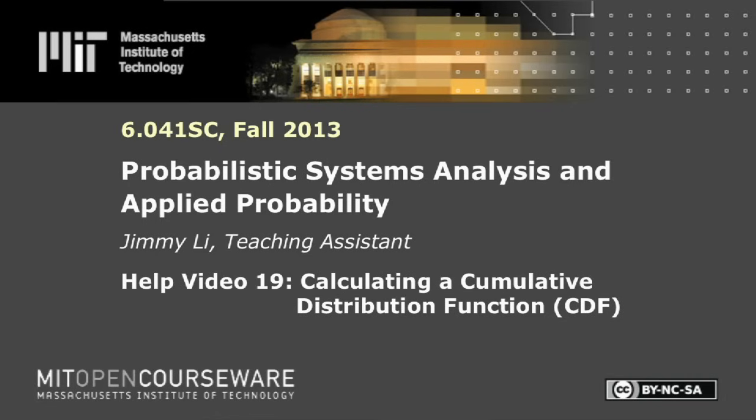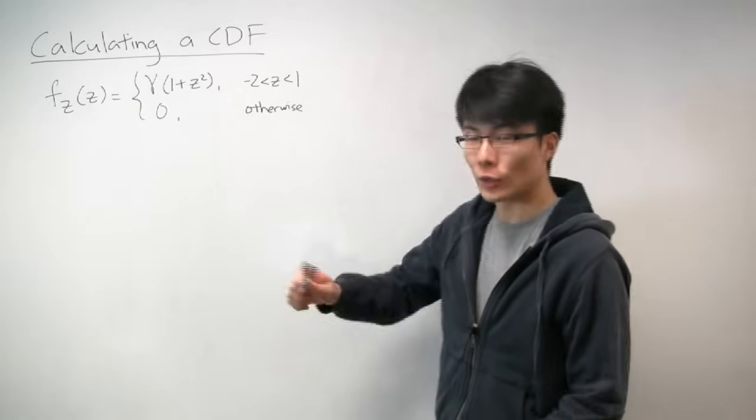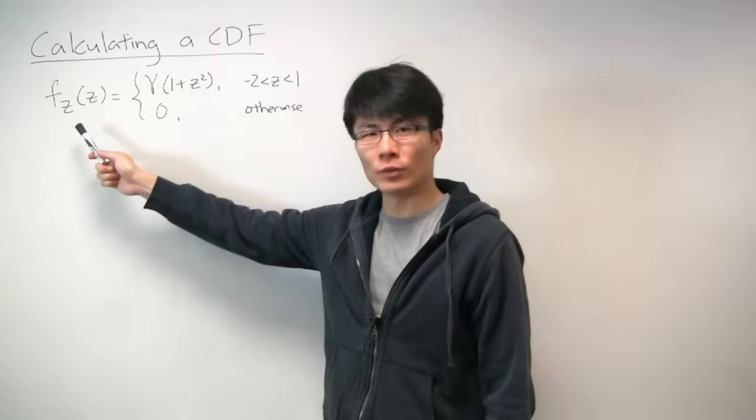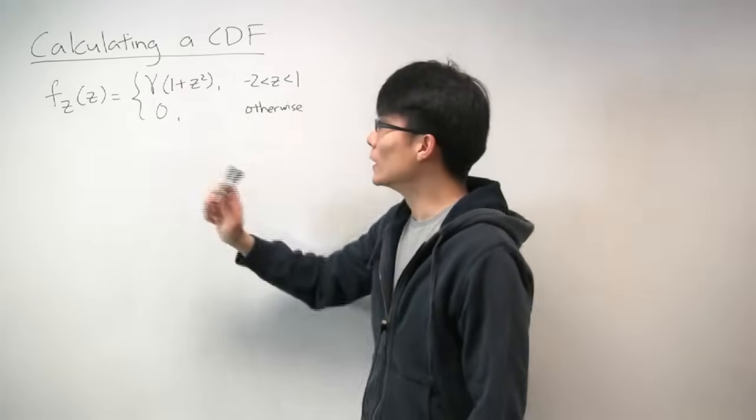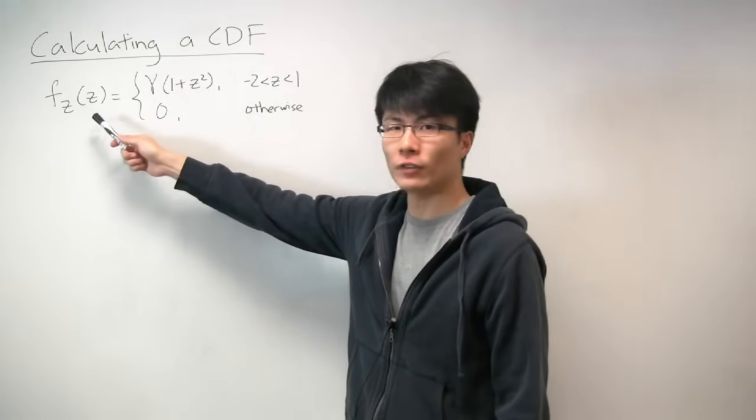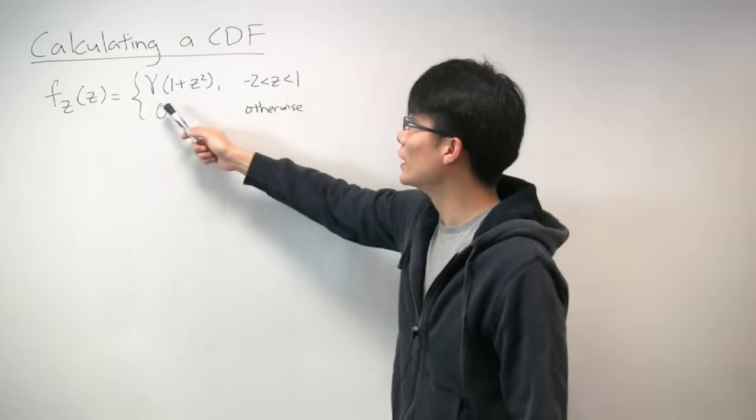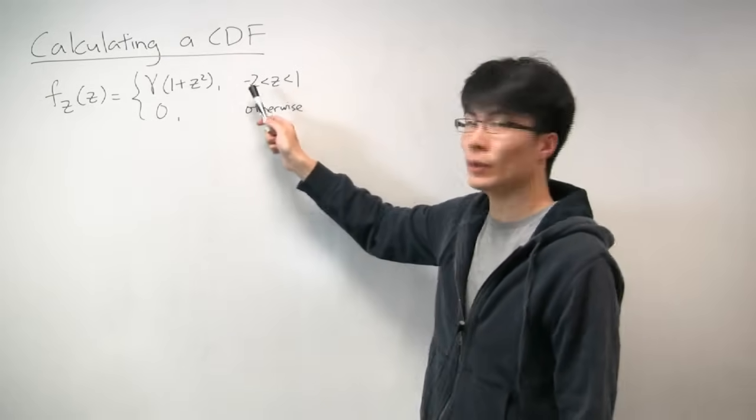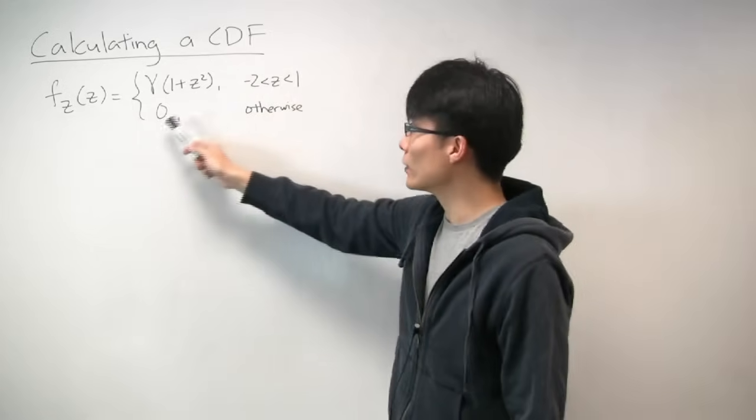Hi. In this problem, we'll get some practice working with PDFs, and also using PDFs to calculate CDFs. So the PDF that we're given in this problem is here. So we have random variable z, which is a continuous random variable. And we're told that the PDF of this random variable z is given by gamma times 1 plus z squared in the range of z between negative 2 and 1. And outside of this range, it's 0.